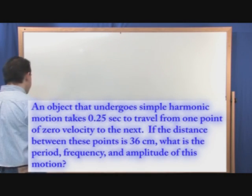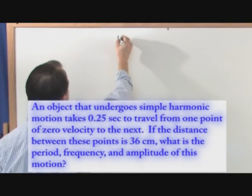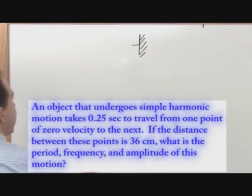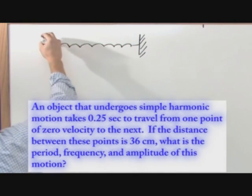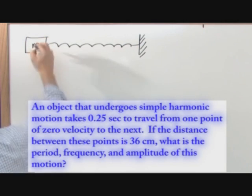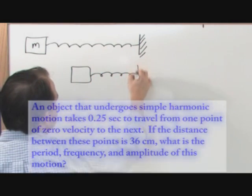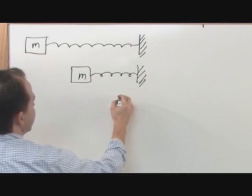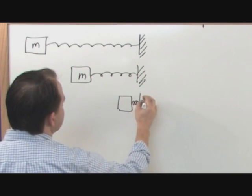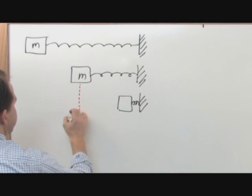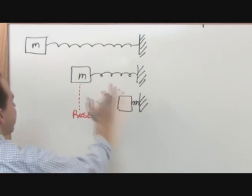So the first thing you really should do is draw a picture because it really helps. So here's a wall. It's simple harmonic motion, I like to talk about springs. So we have a mass here. An object is doing simple harmonic motion, it takes 0.25 seconds to travel from one point of zero velocity to the next. So let's say it's stretched all the way, here's an intermediate position, and then here's the compressed position right up against the wall. This, the middle position, we're going to call that the rest position because right between the two extremes is when the thing is totally at rest.